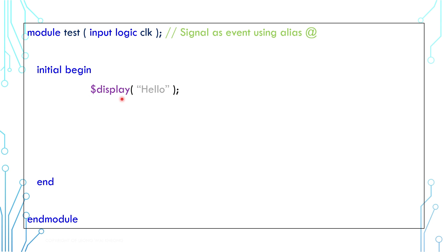We can use event to control an execution. For example, if we want to print this message only after the clock toggles, we can put @ clock here. If this is the clock behavior, the message will be printed at this moment.